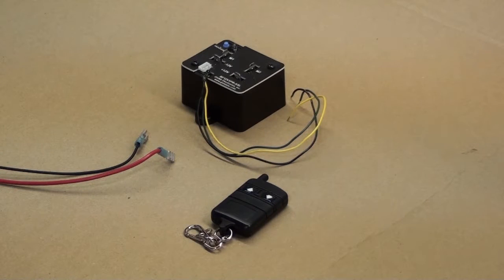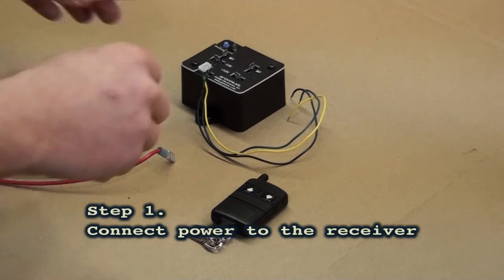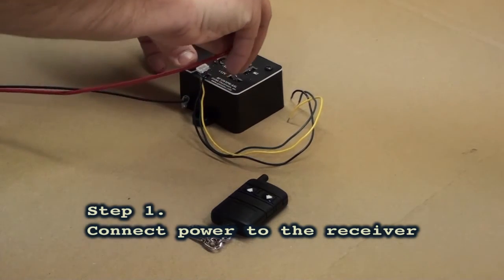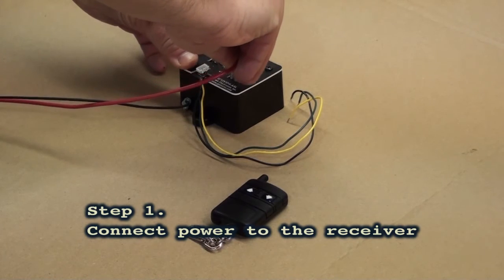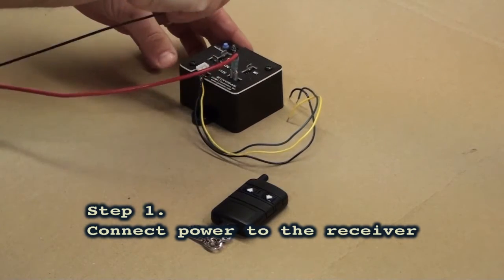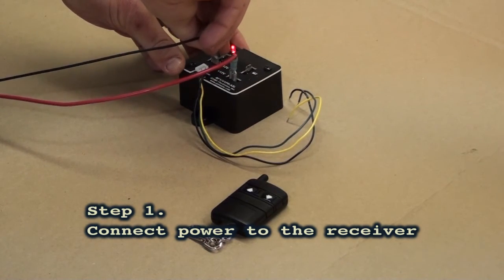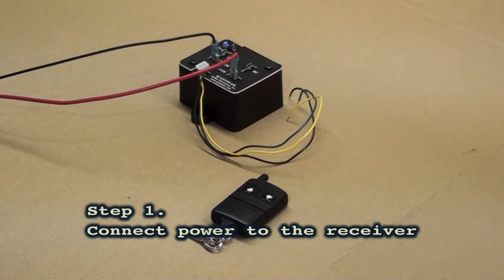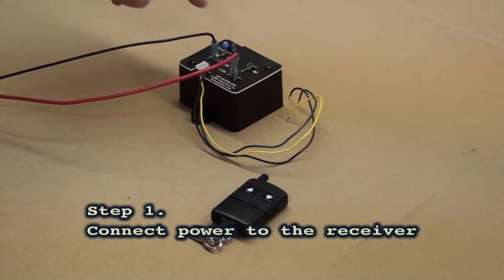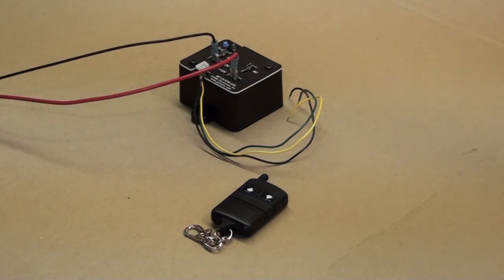The first step in programming your unit is connecting power. To do that, I connect the positive lead to the positive terminal and the negative lead to the negative terminal. When power is connected, the red LED will turn on and quickly turn off to indicate that power has been connected.